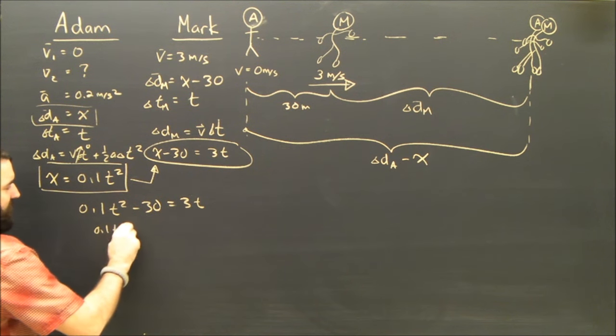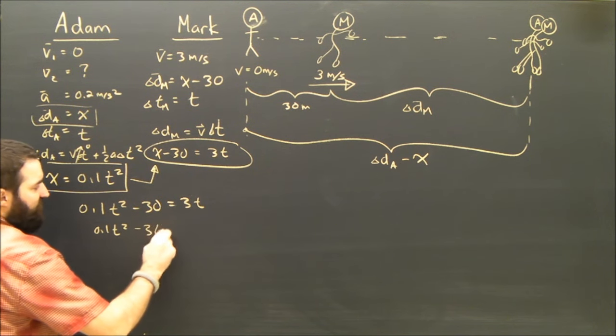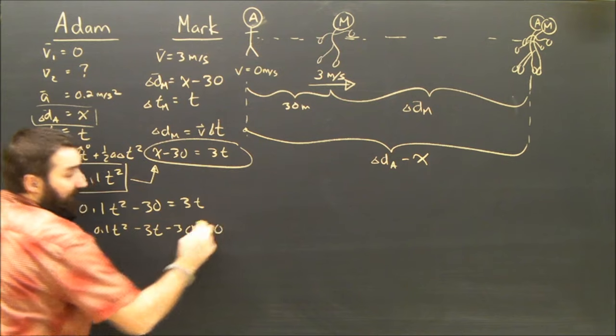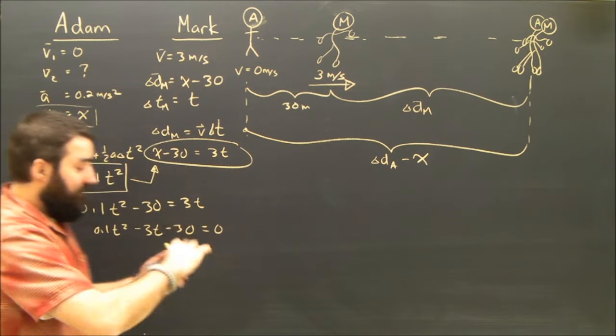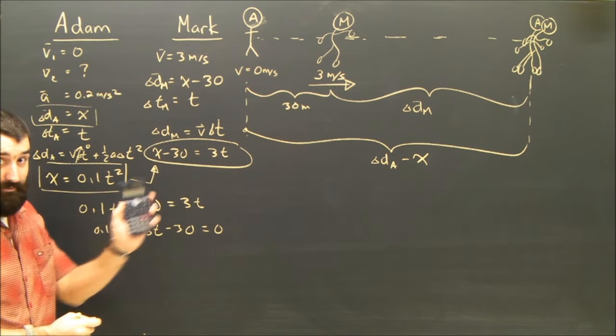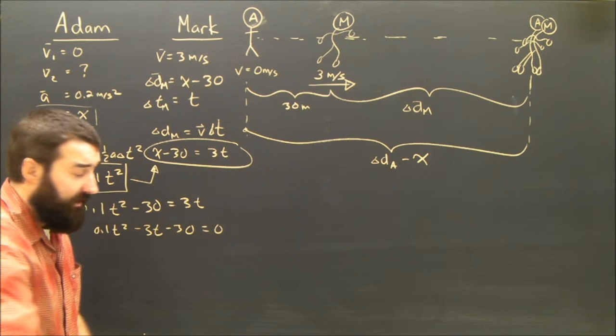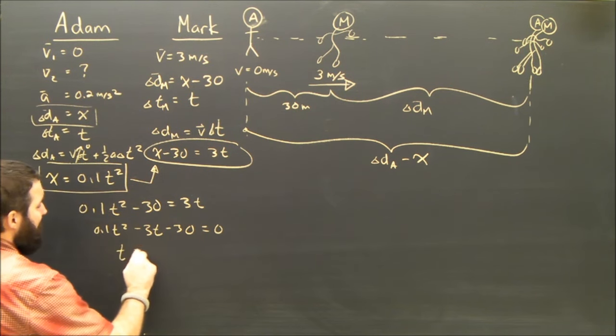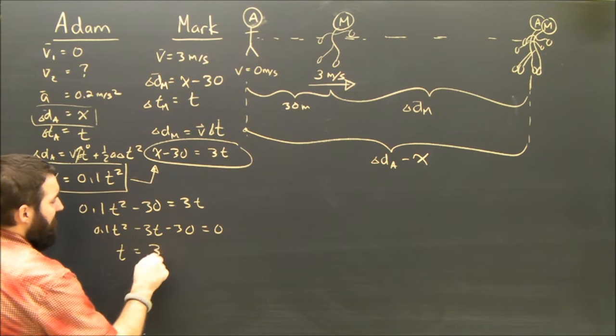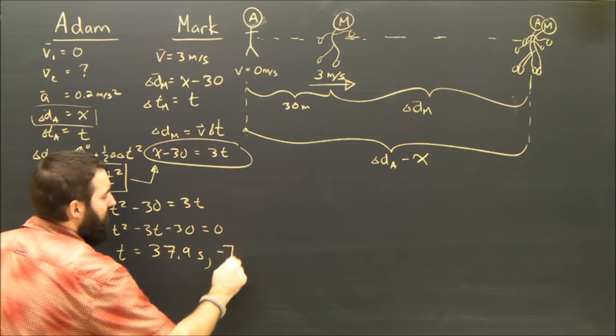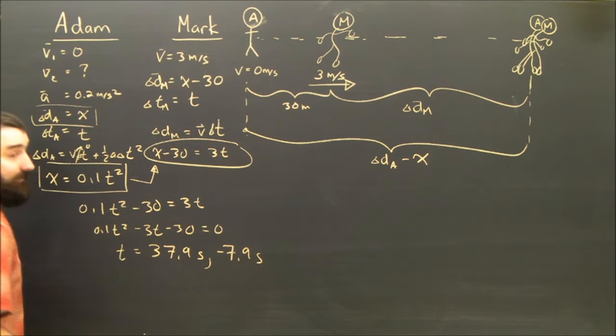Rearranging this, because it is, of course, a quadratic equation, I get that. I like to use my not super smart calculator, but pretty smart, it's not a graphic calculator, to answer that. It doesn't take very long. And I see quadratic formula that t is either 37.9 seconds or negative 7.9 seconds.